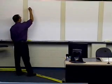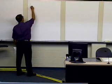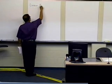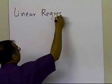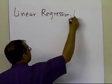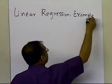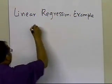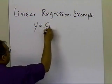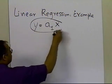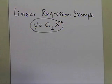In this segment, we're going to take an example of linear regression, but a special case where the intercept is zero. So you are trying to develop a relationship between y versus x, with a1 being the slope, but there is no intercept.